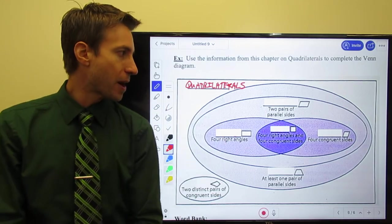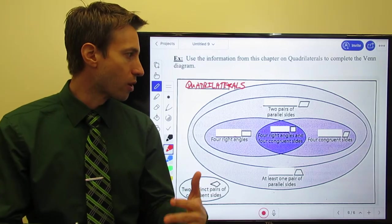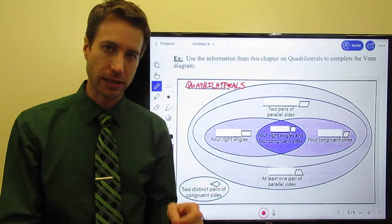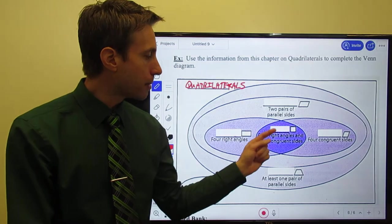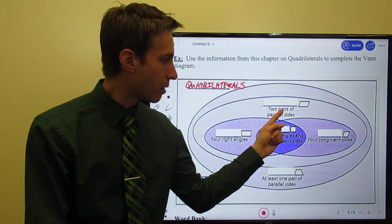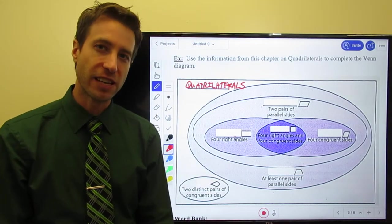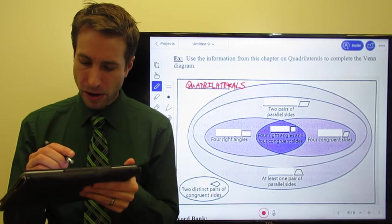All right, now what we did is we then began to sort of break things down into special kinds of quadrilaterals. And we come to quadrilaterals where two pairs of parallel sides. Well, guys, that's our definition of a parallelogram.